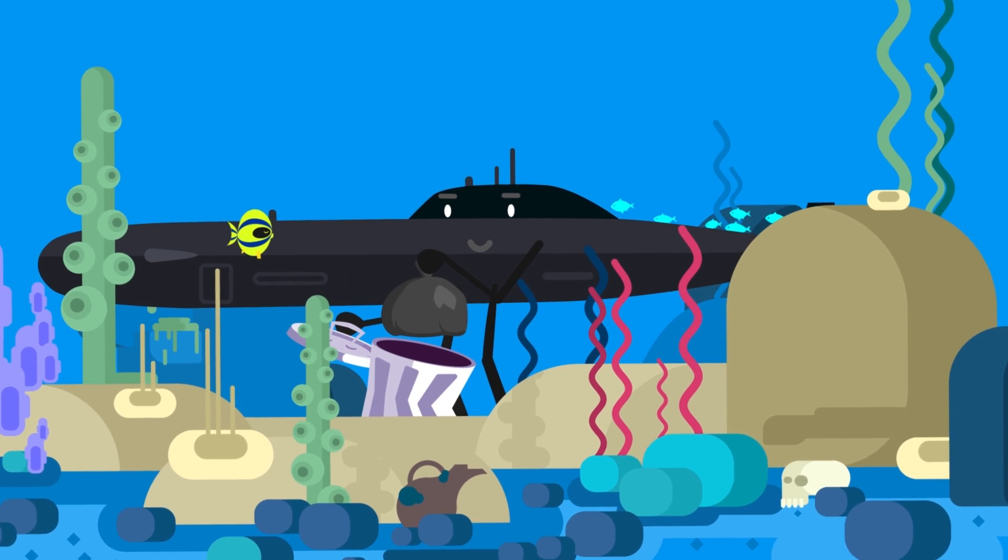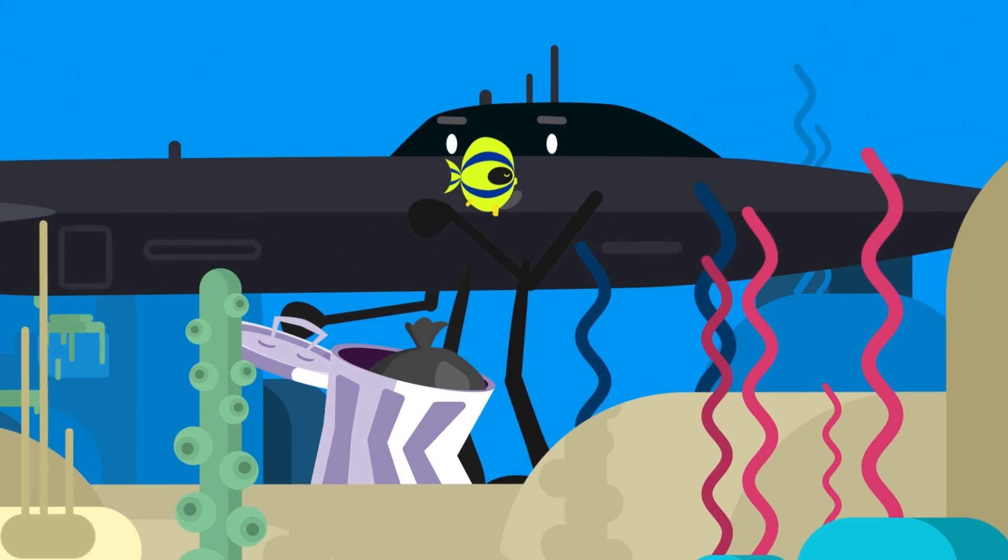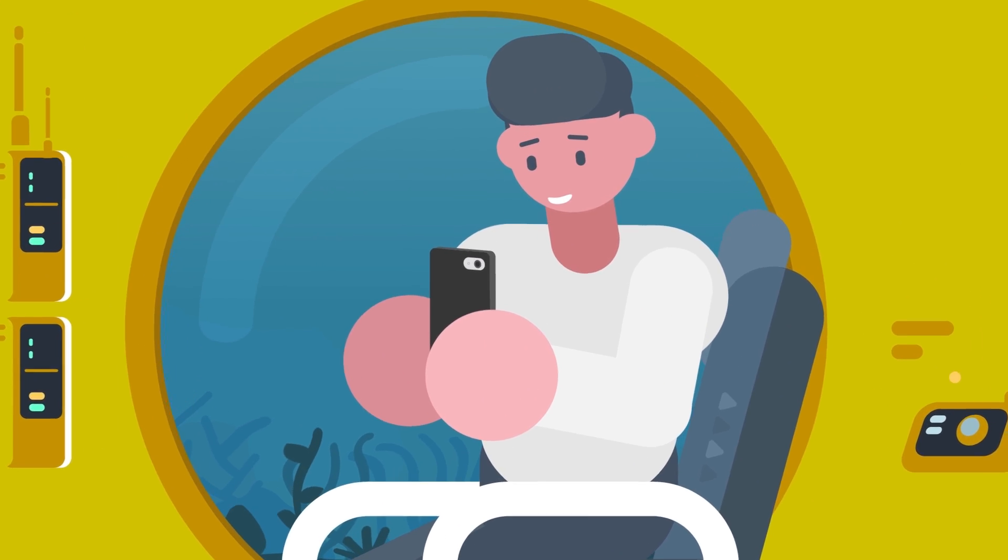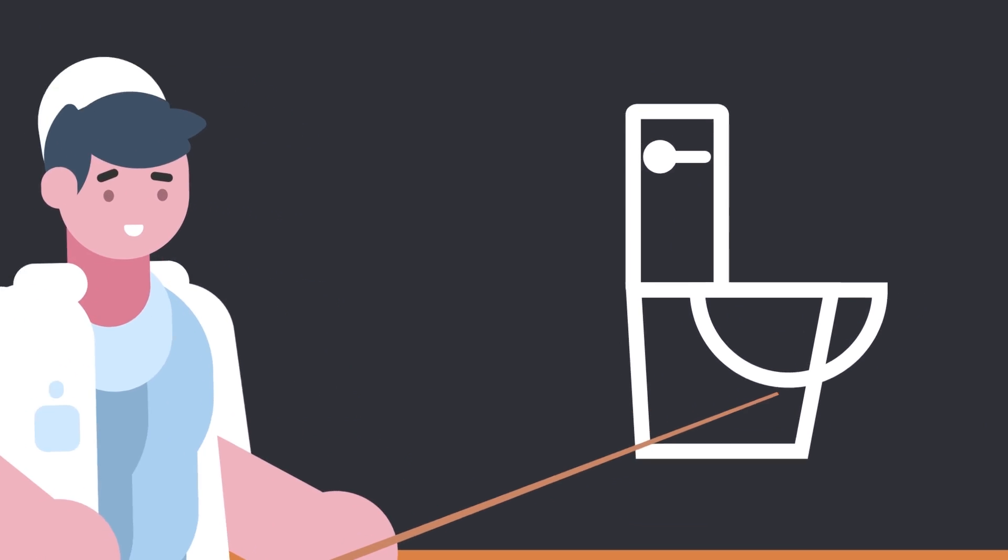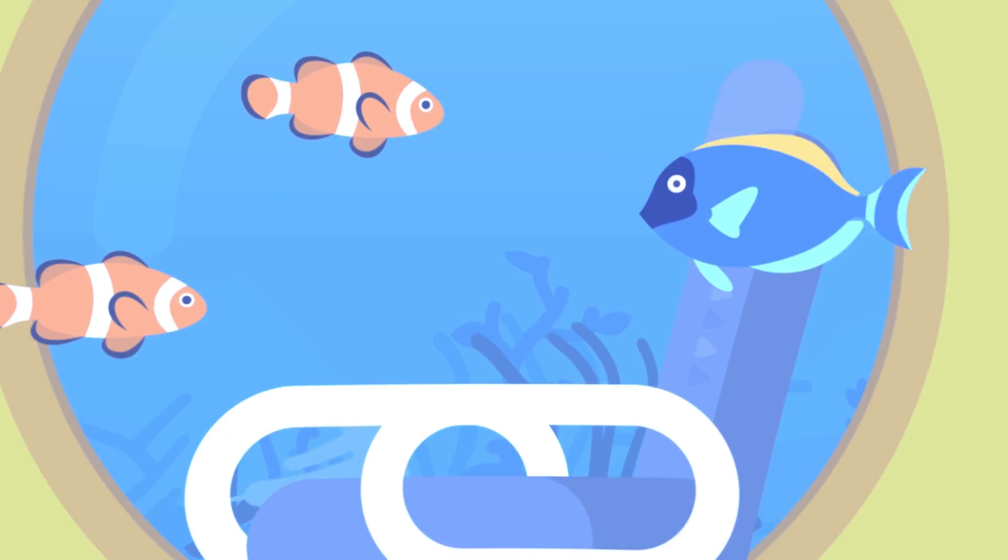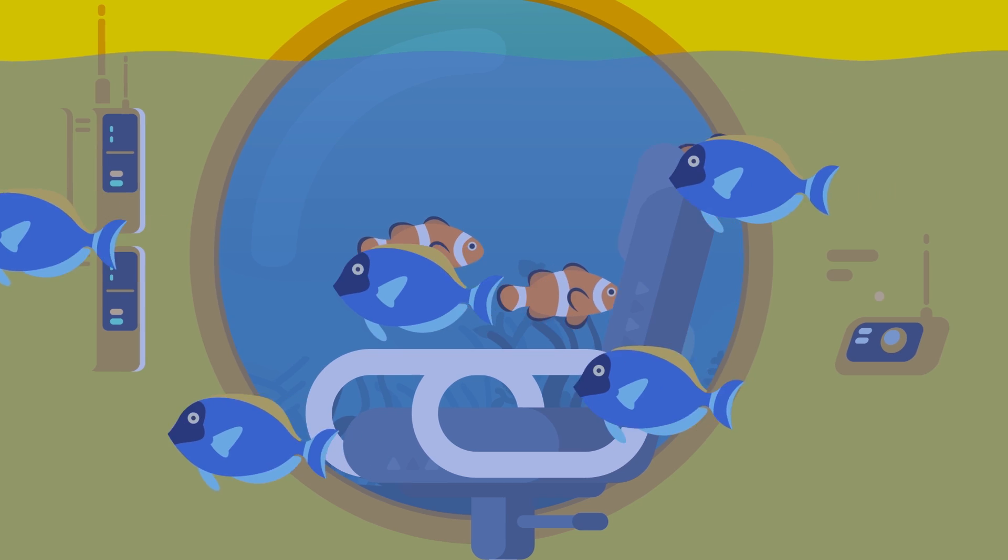While a regular submarine can simply store waste and expel it at depths with lower pressures, if you tried to do the same you'd run into a similar problem as trying to turn on a tap to bring in outside water to desalinate and drink it, namely that you'd immediately flood your entire habitat.